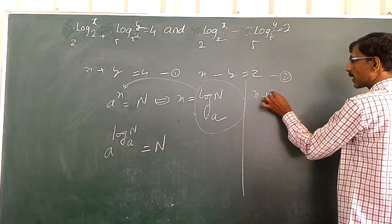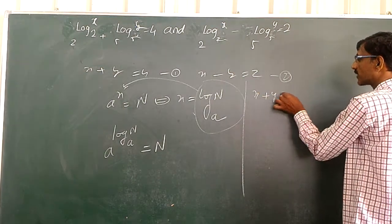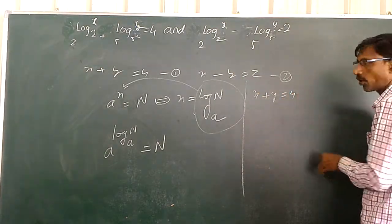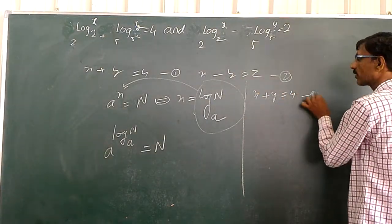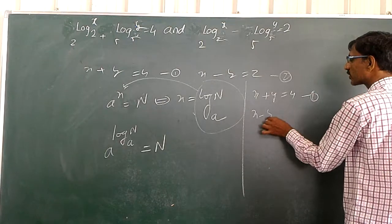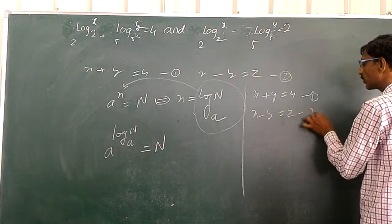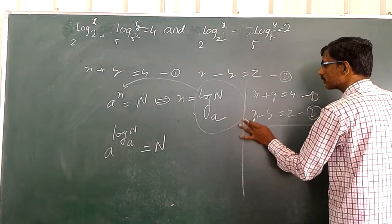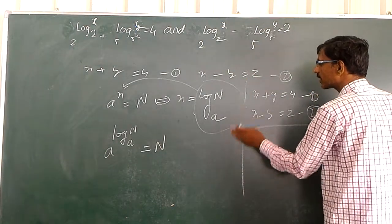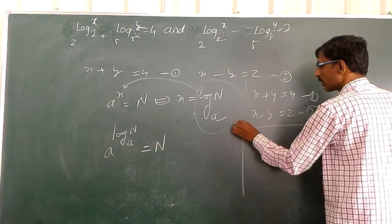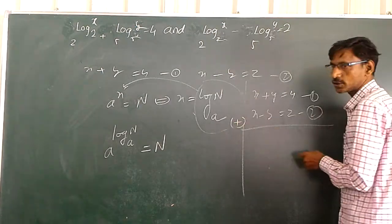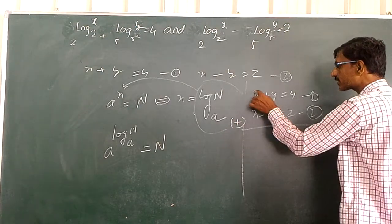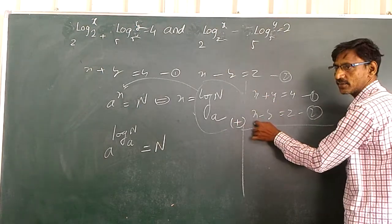X plus y is equal to 2. Equation 1. X minus y is equal to 2. Equation 2. By adding these two, n is equal to 2. We add x plus x — same.